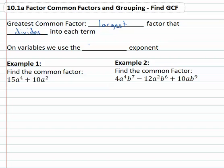So on variables we will use the lowest exponent that is in common on all of them. For example, if I have 15a to the fourth plus 10a squared and I'm asked to find the greatest common factor, I could look and say what can I divide both of these by?